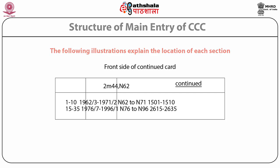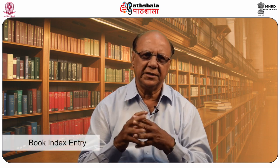Added entries. CCC prescribes the following four types of added entries for periodicals. First is cross reference entry. Second is class index entries, further divided into five types: specific CIE, additional CIE, generic CIE, optional CIE, and ordinary CIE. Third type is book index entry. Fourth is cross reference index entries.